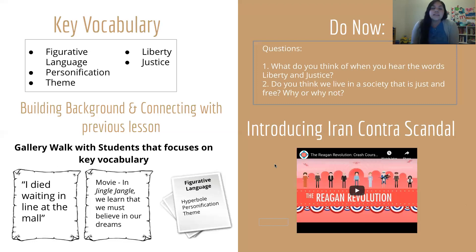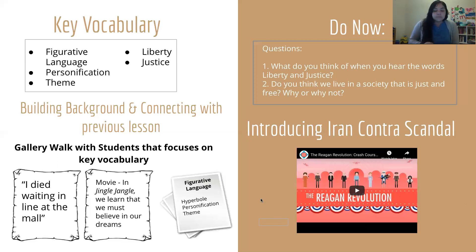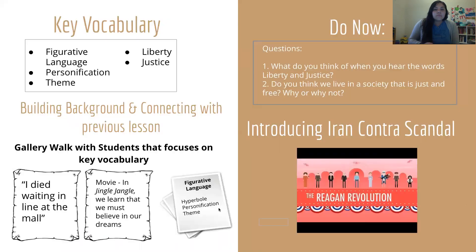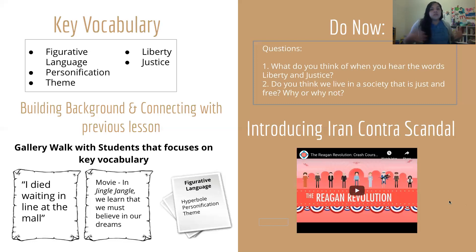Just as important as activating prior knowledge is giving students some historical background on what is happening in the poem. One of the biggest topics the author addresses is the Iran-Contra scandal. We will show students a YouTube video summarizing what happened historically, using Spanish subtitles to make it accessible to our full range of learners. Right after the video, we'll quickly discuss whether President Reagan's actions were justified or just, and refer back to the whiteboard to see how students make those connections.